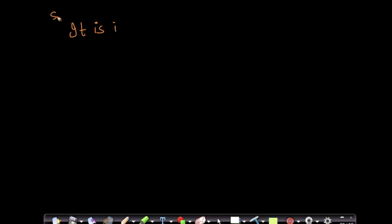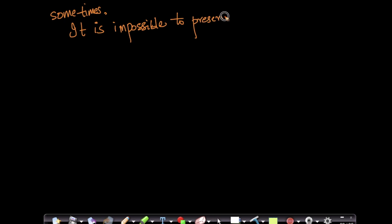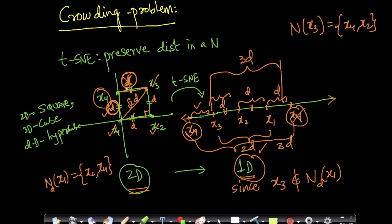There will always be cases like this. This is proof by contradiction — I took a case where my data points form a square, and I showed I will not be able to project this data from 2D to 1D while preserving all the distances in a neighborhood. So sometimes it is impossible — especially in the case of hypercubes, it is impossible to preserve distances in all the neighborhoods. I proved it with contradiction: I took 2D data, tried to project it into 1D, and I failed.